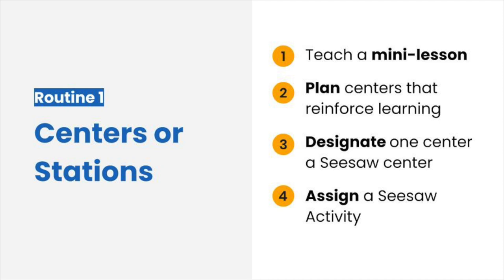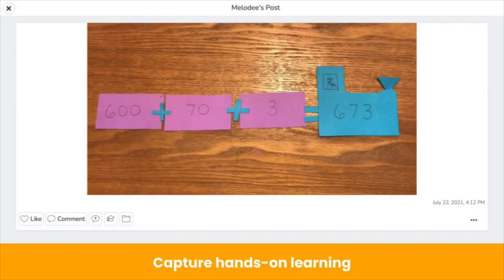Start by giving a mini-lesson to teach a concept or skill, and as you plan centers for students to rotate through, designate one or more to a Seesaw center. Make sure devices have access to the Seesaw Class app or app.seesaw.me. Then, assign Seesaw activities for students to complete at the Seesaw center. Activities that work best for centers prompt students to capture hands-on learning, like math manipulative work, that otherwise gets lost when students finish the station.